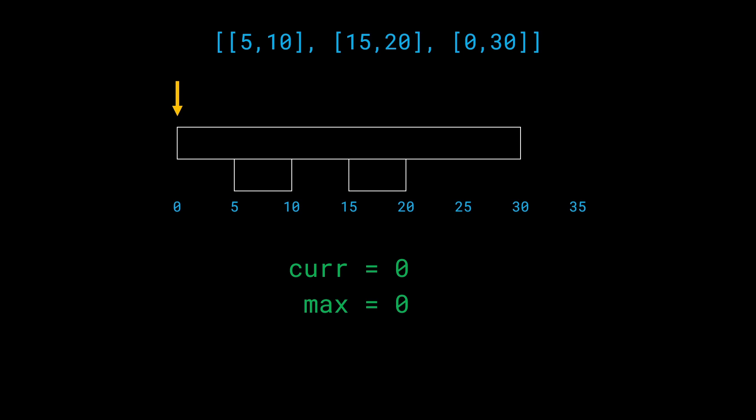`max` will be the answer at the end. As soon as we hit time zero, we see one meeting starting, so we increase `curr` by one — `curr` equals 1. The maximum is also updated to 1. From time zero through time four, we only require one total meeting room, so `curr` remains 1. But as soon as we hit time equals 5, we need two meeting rooms because the meeting from 5 to 10 starts — `curr` increases to 2, meaning two meetings are going on simultaneously.